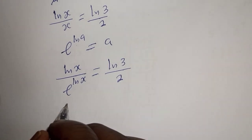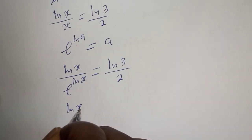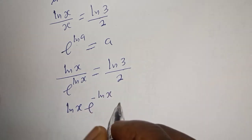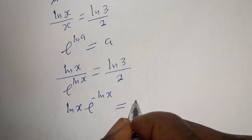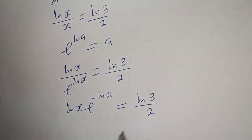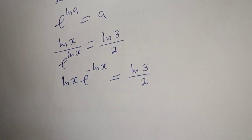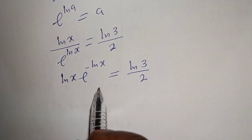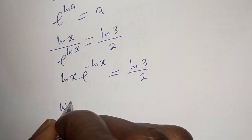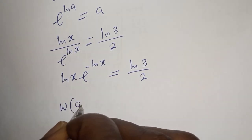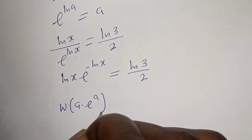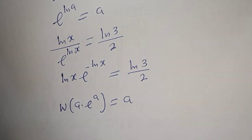Then this becomes: ln of s times e raised to power minus ln of s is equal to ln of 3 over 2. At this point, let's introduce the Lambert W function: if you have w of a multiplied by e raised to power a, this equals a.